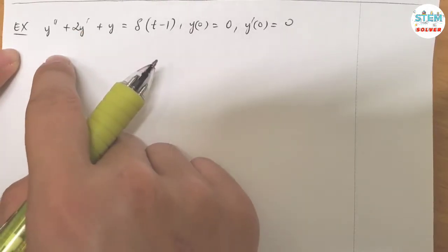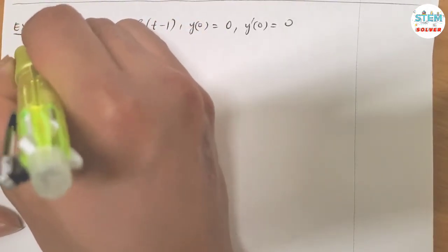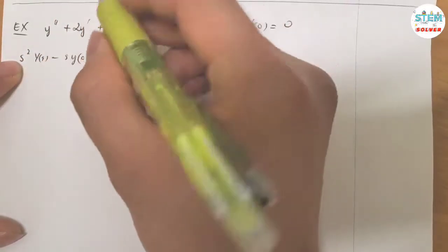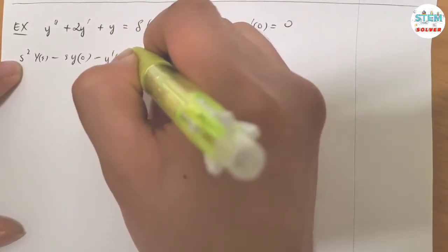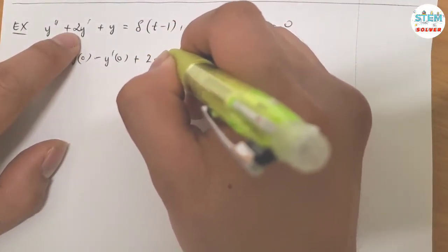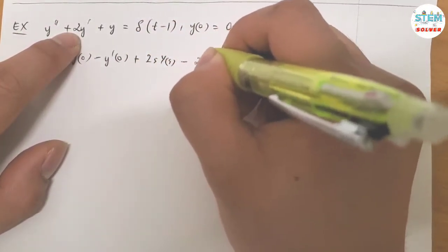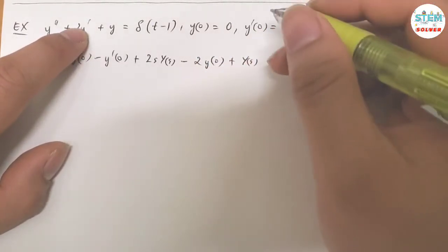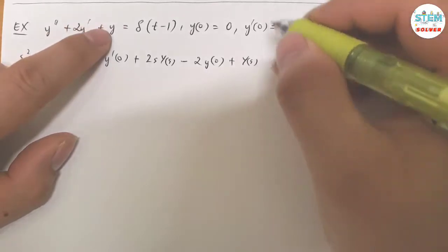On the left side I'm going to use the derivative theorem. Applying that theorem I have S squared times capital Y of S minus S times Y of 0 minus Y prime of 0 plus 2S capital Y of S minus 2Y of 0 plus Y prime of 0, or capital Y of S equals.